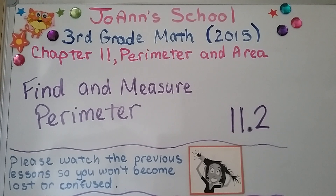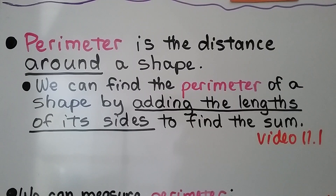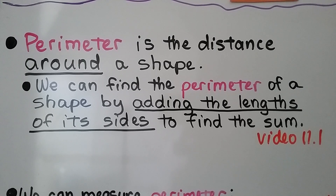Lesson 11.2 — we're going to find and measure perimeter. We modeled perimeter in lesson 11.1; if you haven't seen it, it's linked in the description. Perimeter is the distance around a shape, and we can find the perimeter of a shape by adding the lengths of its sides to find the sum.